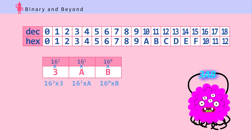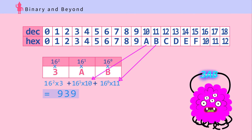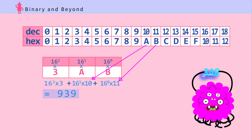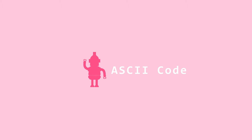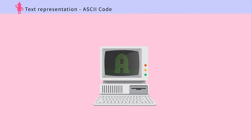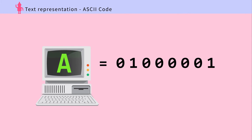Step three: multiply the place values with their hex numbers. Step four: add them all up. There are 939 aliens in the spaceship. How are these numbers actually used? Let's look at some examples. ASCII code: computers speak in numbers, so how is text, images, music, and other forms of data stored?